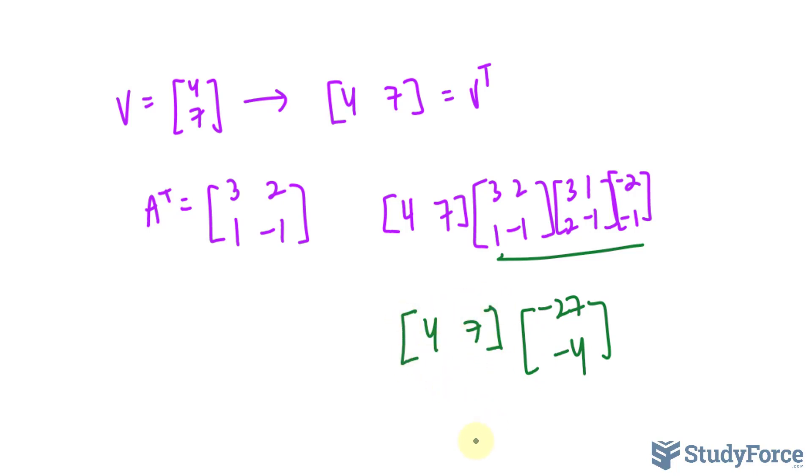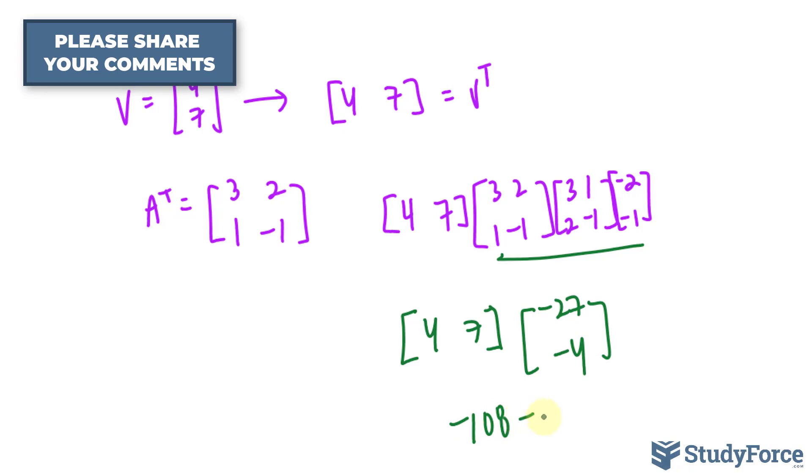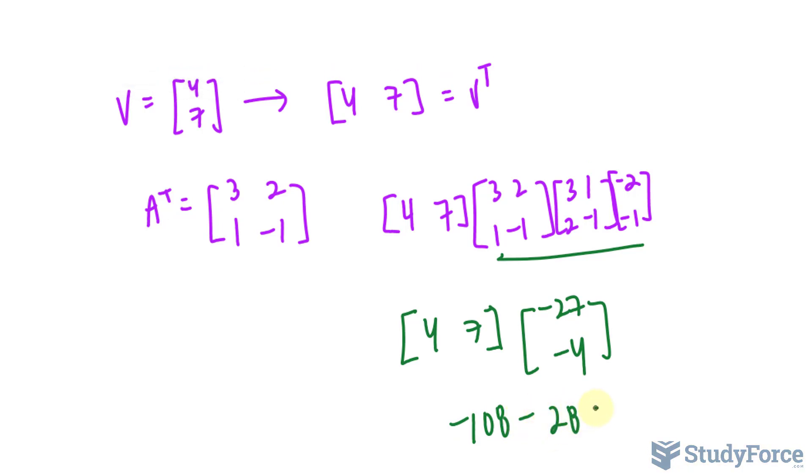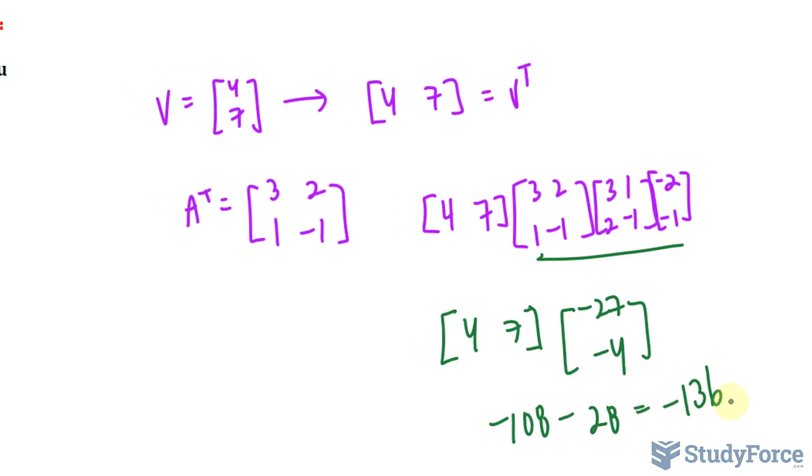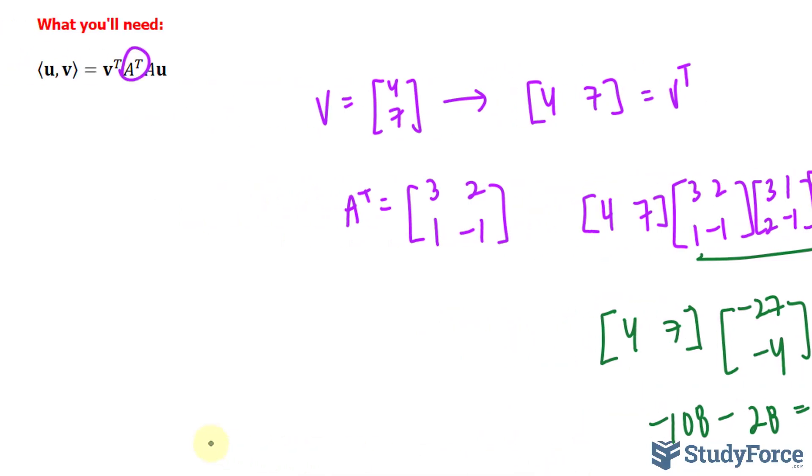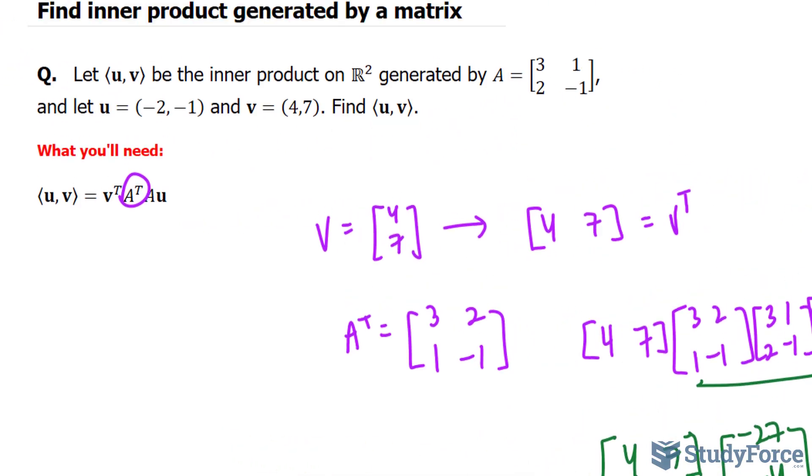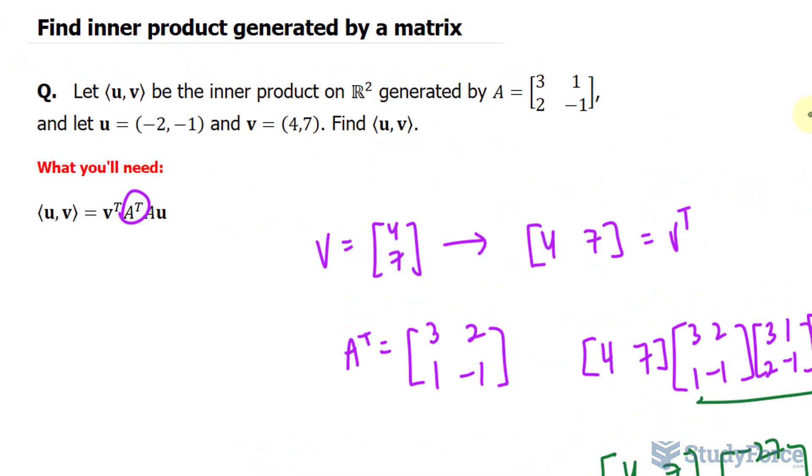You end up with the inner dot product for u and v being 108, or negative 108 minus 28, which gives you negative 136. So negative 136 is the inner dot product of u and v, and that is how to find the inner product generated by a matrix.